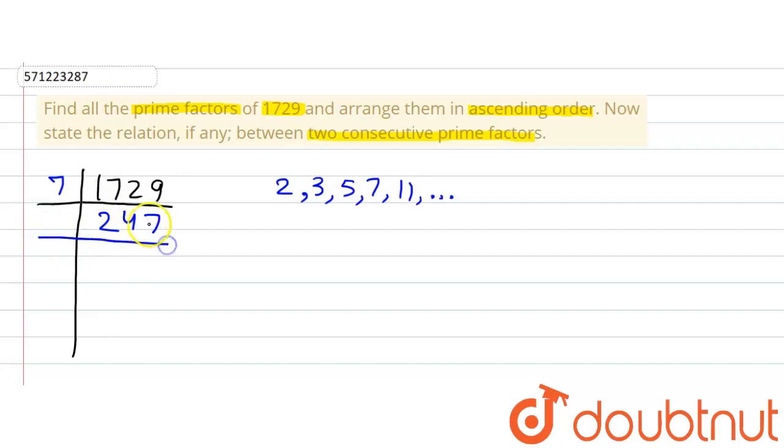Now is 247 divisible by 7? No. We'll move to the next prime number, 11. Is 247 divisible by 11? No. Next prime number is 13. Now we observe that 247 is divisible by 13.